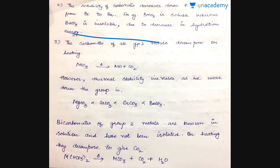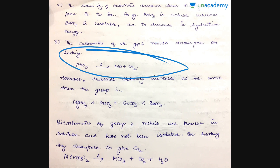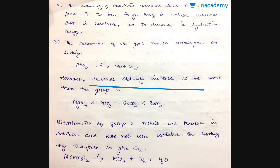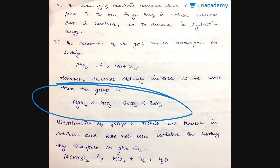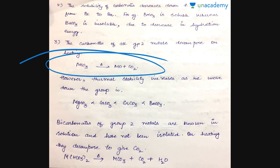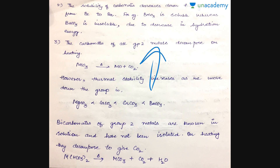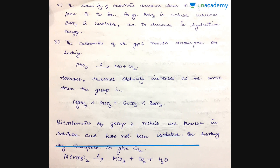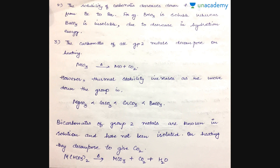The carbonates of all group 2 metals decompose on heating. Their thermal stability increases as we move down the group, so barium carbonate is comparatively more stable than strontium, calcium, and magnesium carbonates. However, at very high temperatures they all decompose to their corresponding metal oxides with liberation of CO2 gas. The bicarbonates of group 2 metals are known in solution only and have not been isolated; on heating they decompose to give CO2, water, and the metal carbonate.